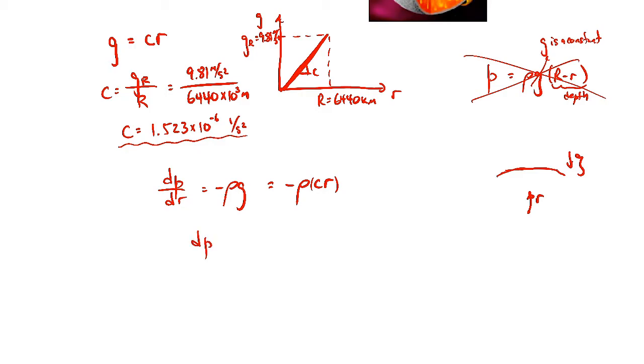We can go ahead and solve this. So we'll have dP is equal to minus rho times C times r dr. I'll integrate both sides. We'll go r goes from, little r goes from zero to capital R.